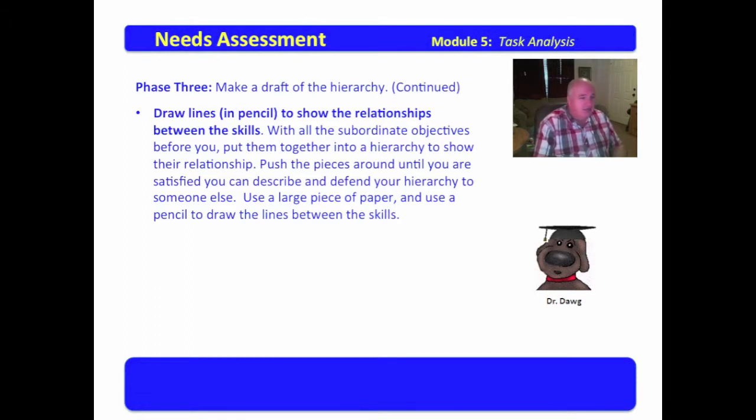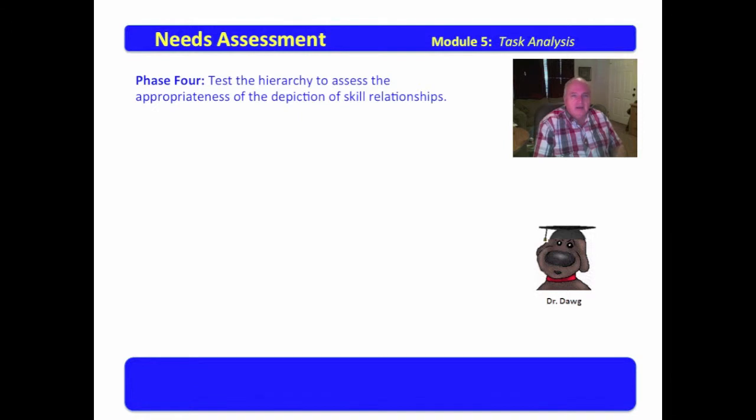Use a large piece of paper and use a pencil to draw the lines between the skills. And some of you who are really digitally savvy, just get on the computer, draw it on there, and then you can do all sorts of things with it. But for some of us older folks, we may have to have the pencil and paper. Maybe the older folks that are using the computer and the kids may have to have the pencil and paper. Who can tell?